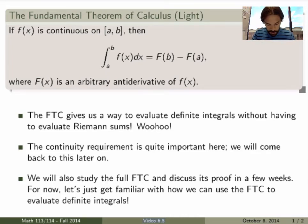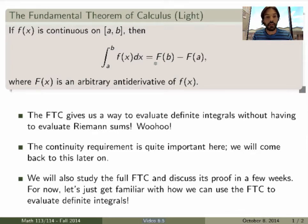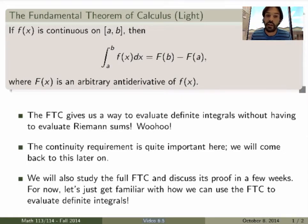So the statement is the following. If you have a function f, you have to assume that it's continuous over some interval. Then the definite integral of that function — remember that this is defined in terms of a Riemann sum and it calculates the signed area under the function — can be evaluated by first finding an antiderivative of the function, and then taking the difference between the evaluation of this antiderivative at the upper boundary b minus the antiderivative at the lower bound a. So what the FTC does is give you a way of evaluating the definite integral without having to evaluate the Riemann sum.